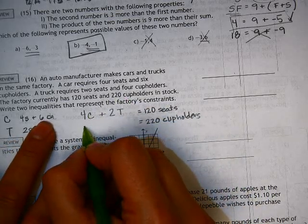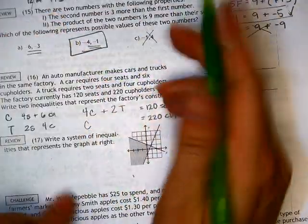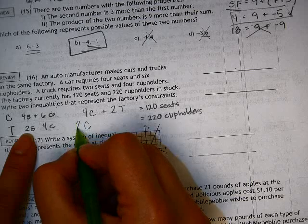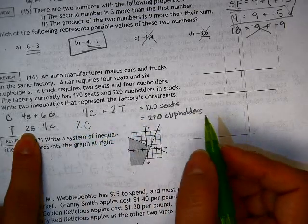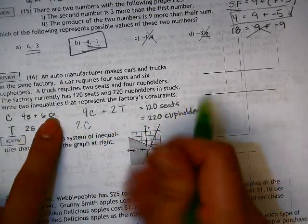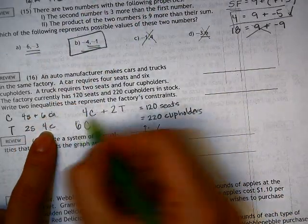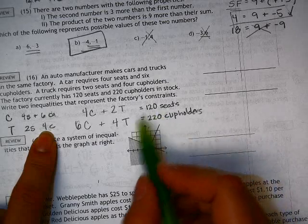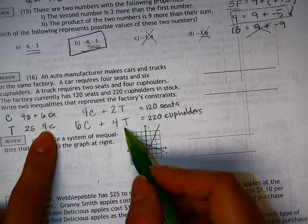And for the cup holders, we have that a car is 6 cup holders, and a truck is 4 cup holders. So here are kind of our 2 little equations that we have going on here.